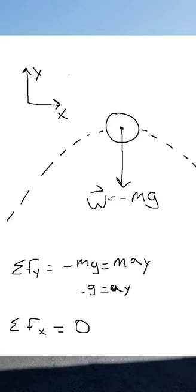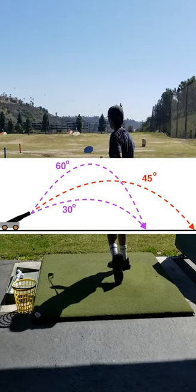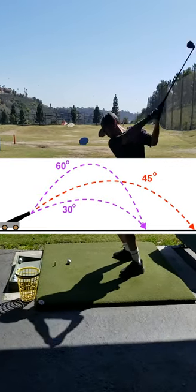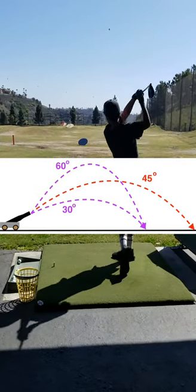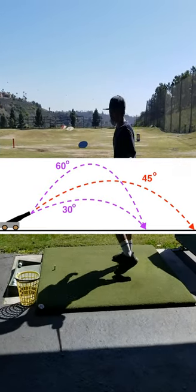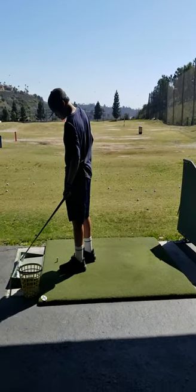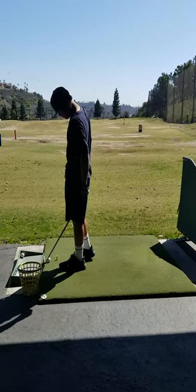This is because of constant velocity in the x direction, and that means there is no acceleration. This picture shows different launch angles, and that 45 degrees will launch it the furthest, assuming there is no spin or air resistance.